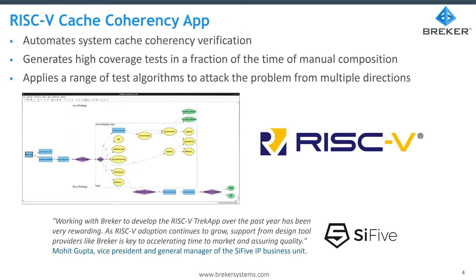To this end we have developed the so-called RISC-V cache coherency track app. This automates the generation of cache coherency test cases, generating not only stimulus but coverage as well as debug information and profiling information. We have applied a number of different algorithms to attack different aspects of coherency verification.